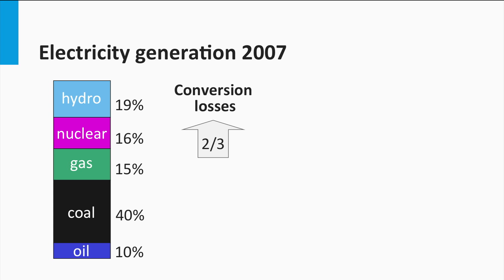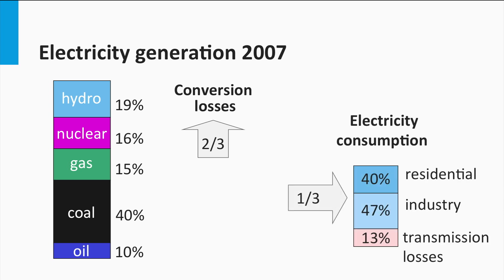In the conversion from chemical and nuclear energy to electricity, two-thirds of the energy is lost, and one-third ends up as electricity. Forty percent of electric energy is used for residential purposes and forty-seven percent by industry. Thirteen percent is lost in transmission. In 2007, transport did not play a significant role in electricity consumption; however, transport-related electricity consumption is expected to increase in coming decades.